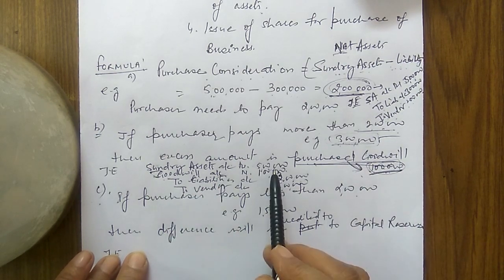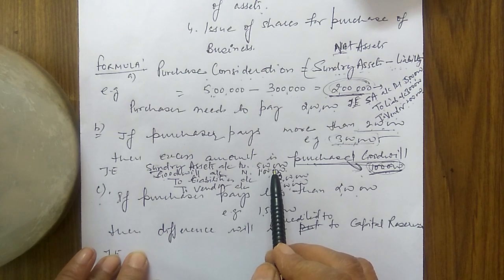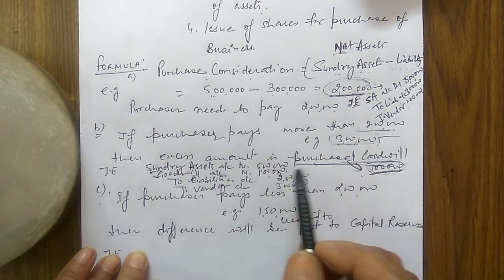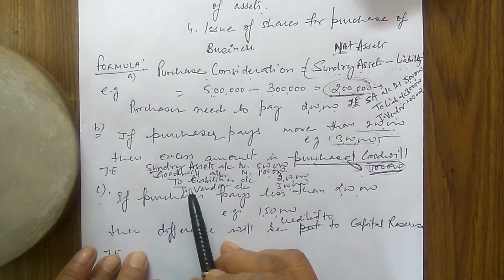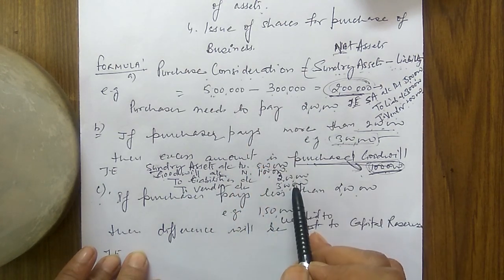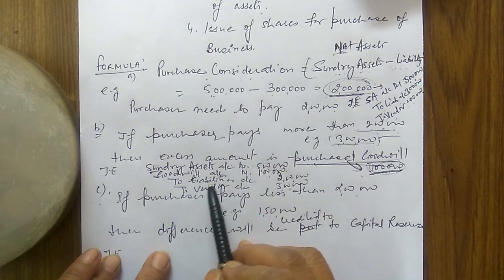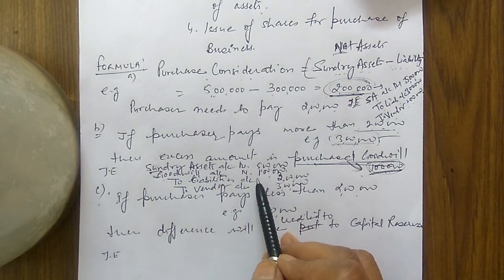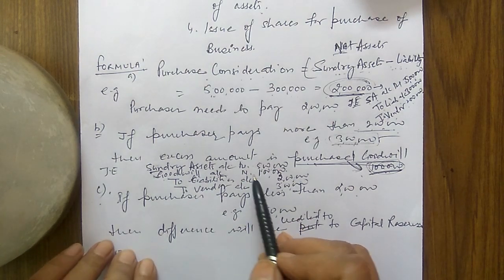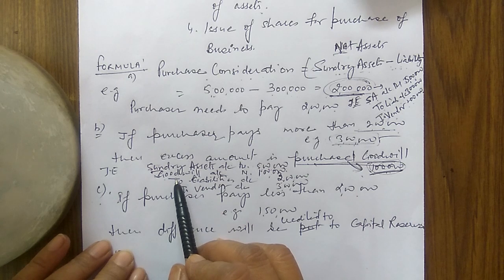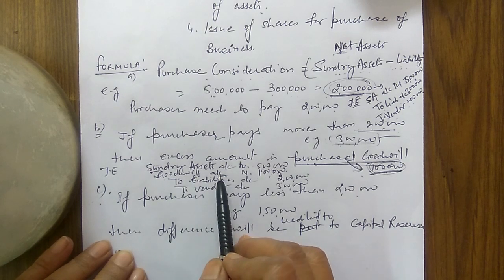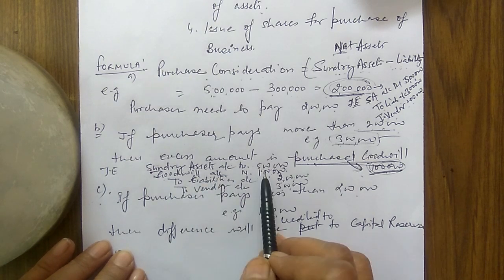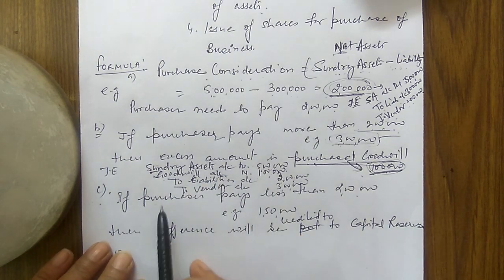The journal entry when goodwill arises: Sundry Assets Account Dr. ₹5 lakh; Goodwill Account Dr. ₹1 lakh; To Sundry Liabilities Account ₹3 lakh; To Vendor Account ₹3 lakh. Debit side = ₹5 lakh + ₹1 lakh = ₹6 lakh; Credit side = ₹3 lakh + ₹3 lakh = ₹6 lakh. The ₹1 lakh difference appears on the debit side as goodwill — this is purchase goodwill.